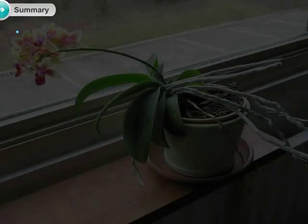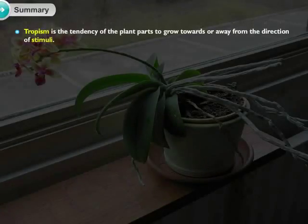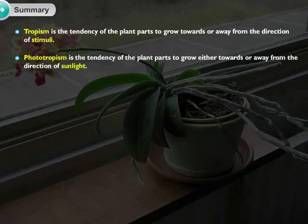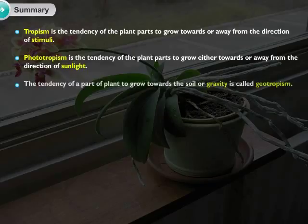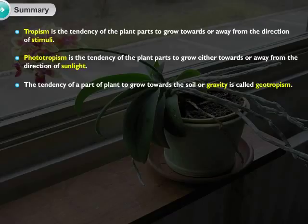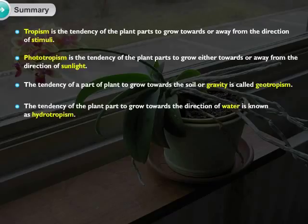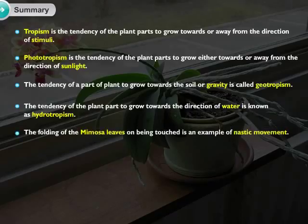Summary: Tropism is the tendency of the plant parts to grow towards or away from the direction of stimuli. Phototropism is the tendency of the plant parts to grow either towards or away from the direction of sunlight. The tendency of the plant parts to grow towards the soil or gravity is called geotropism. The tendency of the plant part to grow towards the direction of water is known as hydrotropism. The folding of the Mimosa leaves on being touched is an example of nastic movement.